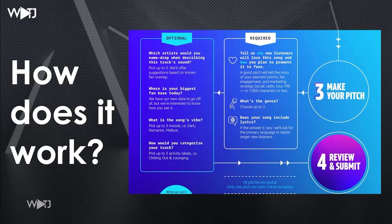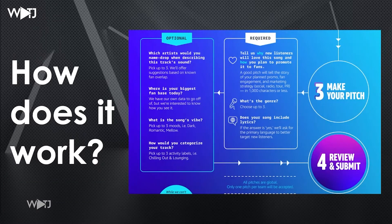When pitching your music, you need to tell Amazon why your listeners will love the song and how you plan to promote it — talk about your strategy and the story behind the song. Also pick some genres for the song; be realistic and make sure they match genres that are actually out there. They also want to know whether your song has lyrics or if it's an instrumental.